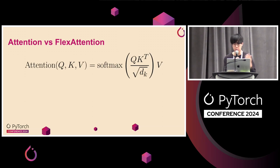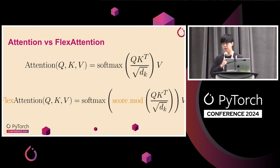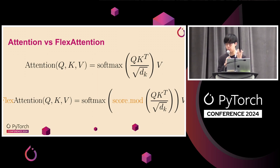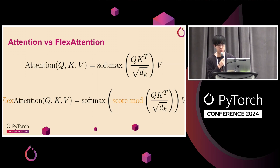To look at what exactly Flex Attention is: many of you are probably familiar with the attention equation — softmax of Q K-transpose multiplied with V. Flex Attention introduces a single function: a score mod. Score mod applies after your matmul between Q and K-transpose. It's kind of a pointwise function, and while it's a very simple function on one hand, it's been a lot more flexible than we had even originally anticipated.